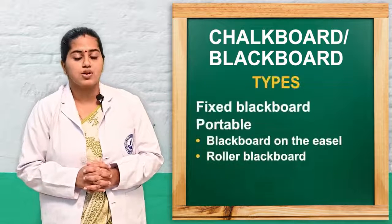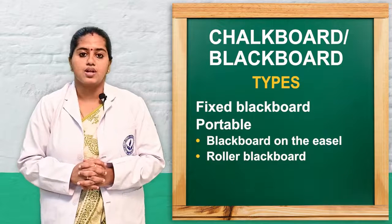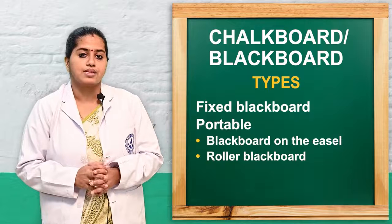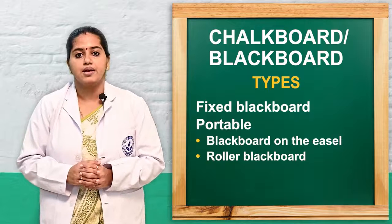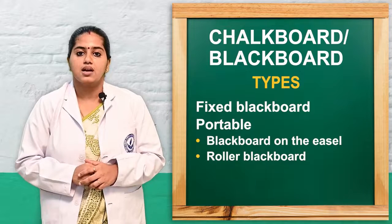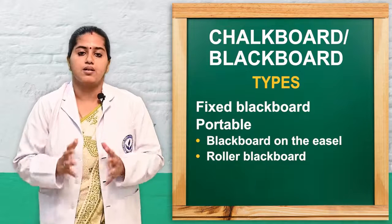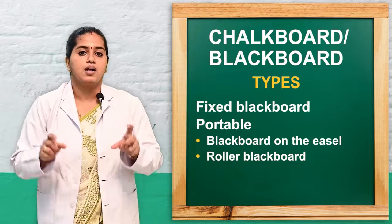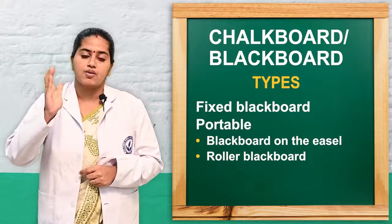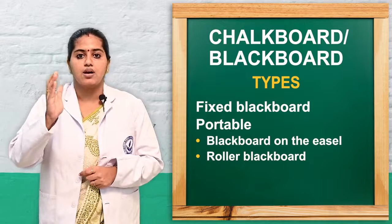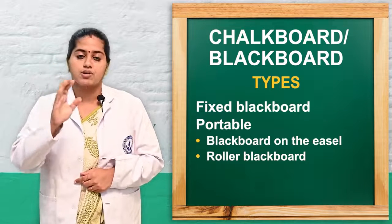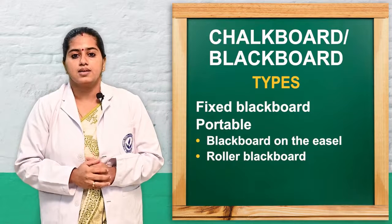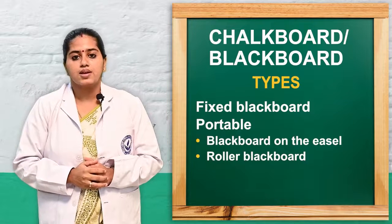Next we will see what are the types of chalkboard. If you see blackboard types, there are mainly two types. One is fixed and another one is portable. Fixed means the blackboard can be fixed on the wall with frames or with cement.